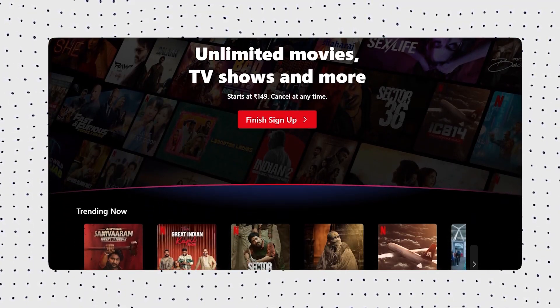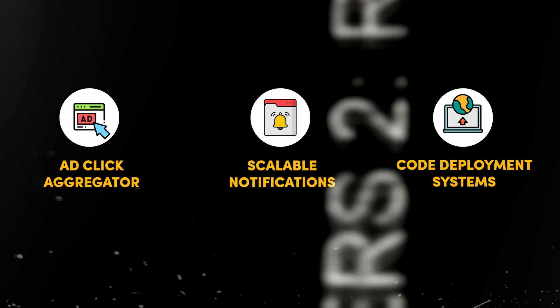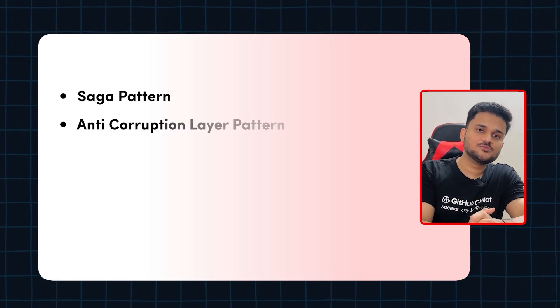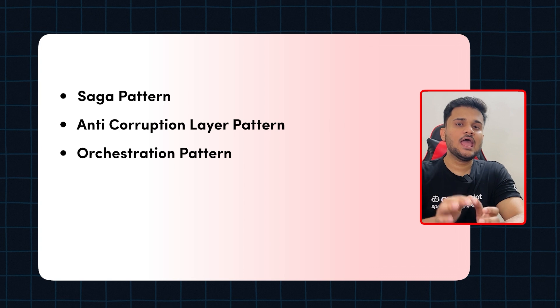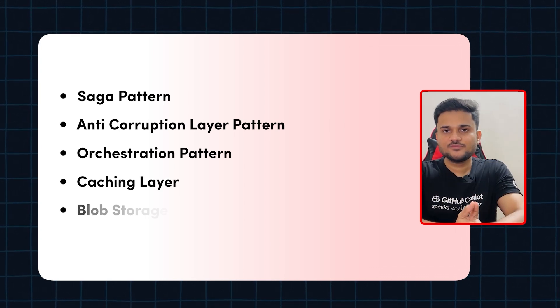This course includes both the low-level design aspect and the high-level design aspect of scalable systems. With respect to HLD, we are going to talk about a lot of systems, including system design of things like Uber, streaming systems like Netflix, how you can design your own ad click aggregator, how you can design scalable notifications, code deployment systems, and many more. Apart from that, there are interesting system design concepts including design patterns like saga pattern, anti-corruption layer pattern, orchestration pattern, and some other interesting aspects around caching layer, blob storages, and whatnot.